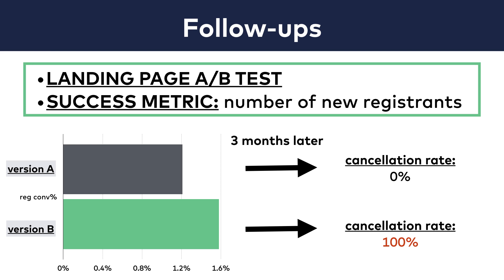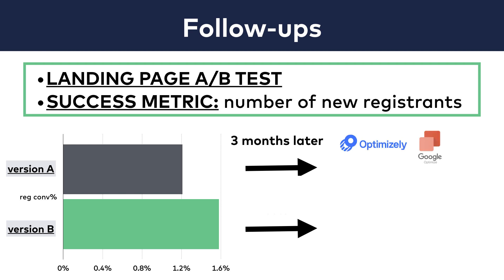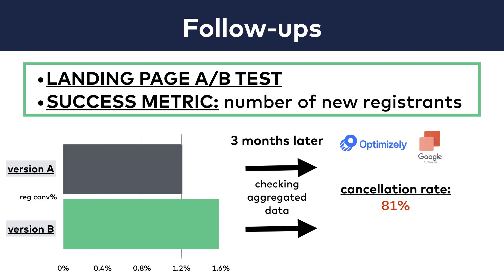Unfortunately, the technical part of this can be tricky. If you have your own in-house A-B testing software, then you can tag your A-B test participants and easily follow up with their long-term metrics later. But if you use Google Optimize or Optimizely, this tagging solution is really hard — frankly, it's mostly impossible to do. This is one of the limitations of these third-party tools. That's not a huge problem, though. Even if you use Google Optimize or Optimizely, you should at least think of the long-term impact of your new version, and you can still check the aggregated numbers and monitor whether your long-term metrics go up or down after releasing a new version of your A-B test to your whole audience.